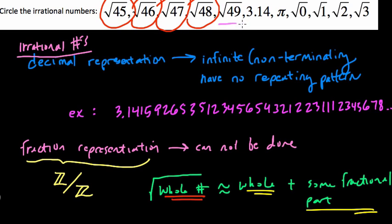The square root of 49 is rational, right? Because that's just 7. 3.14, well, this goes back to our other definition before.